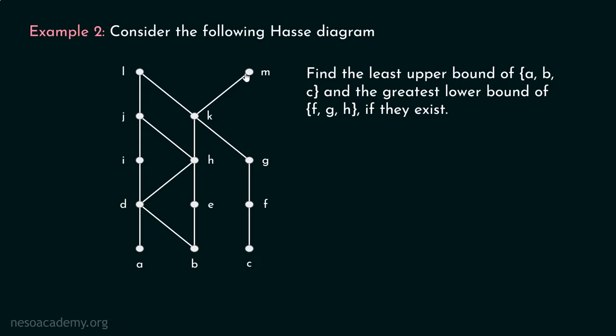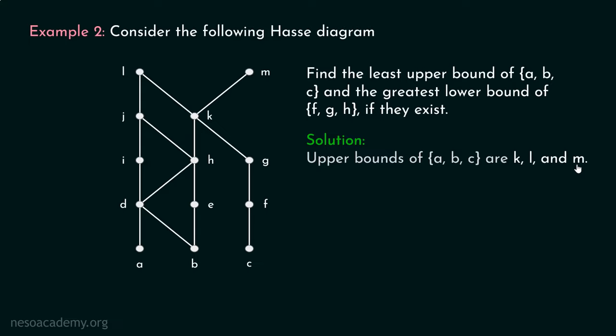Now let's move on to example two. Consider the following Hess diagram. We have to find the least upper bound of A, B, C and the greatest lower bound of F, G, H if they exist. Let's find out the least upper bound of A, B, C first. Upper bounds of A, B, C are K, L, and M — this is what we have seen in the previous lecture. Out of these, we have to find the least upper bound. It is clear that K is the least upper bound because K is related to every other element. Therefore, least upper bound of A, B, C is K.